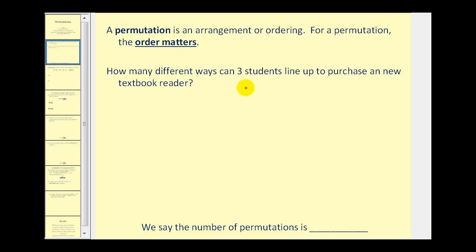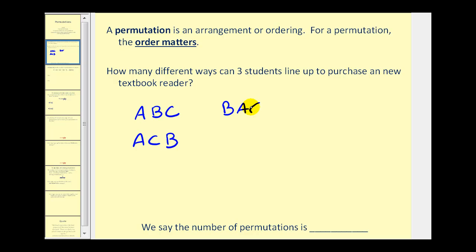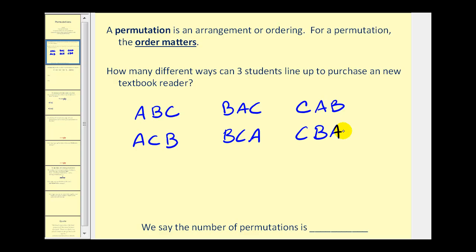So if we label the three students A, B, and C, let's see if we can list the possible arrangements. We could have A, B, C, and then if students B and C changed order we would have A, C, B. Now we'll let student B be first, so we'd have B, A, C or B, C, A. And then lastly if student C is first we'd have C, A, B or C, B, A. So we say the number of permutations would be six.